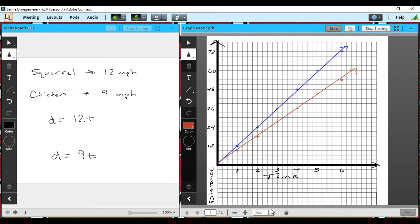And in the last video, we talked about how we could write an equation based off of the speed of the animal. We were writing a linear equation. And so I've written two examples here. So if our race was between the squirrel and the chicken...